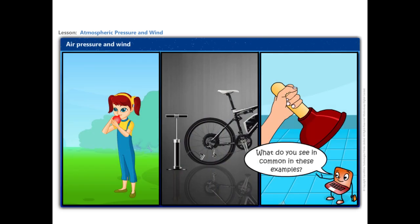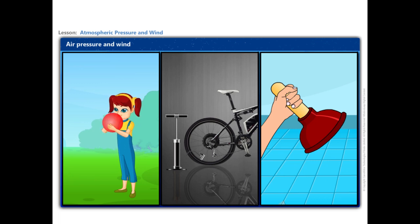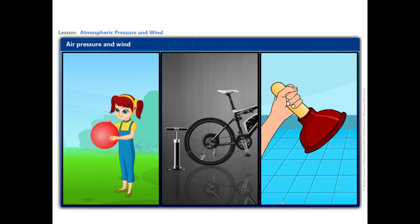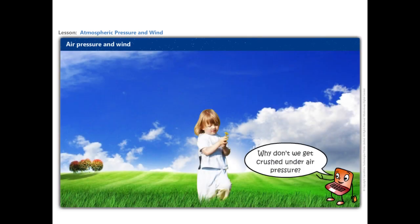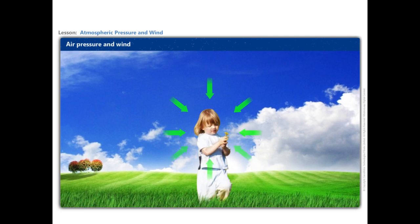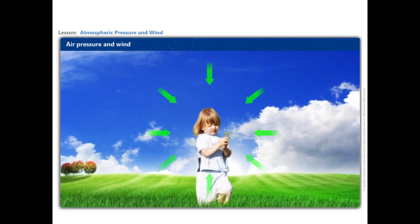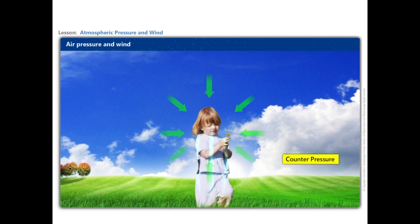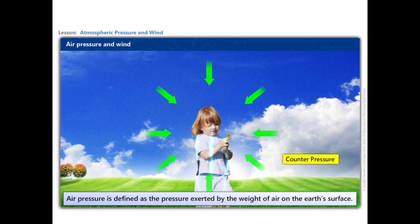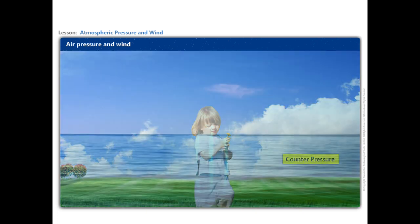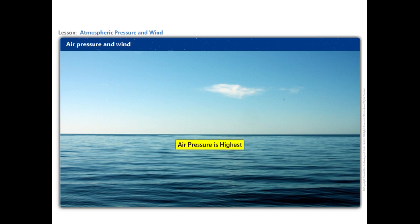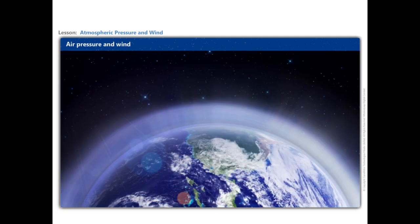In all the situations, we are using air that is exerting a pressure. Even the air above us presses on our bodies with great force. We don't feel the air pressure because the air presses us from all directions and our body exerts a counterpressure. Thus, air pressure is defined as the pressure exerted by the weight of air on the Earth's surface. The air pressure is highest at sea level and decreases with height — as we move up to the upper layers of the atmosphere, the pressure falls rapidly.